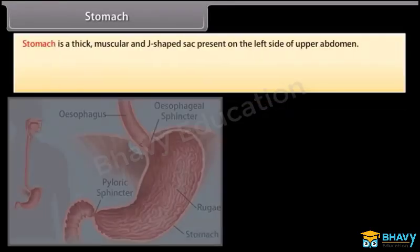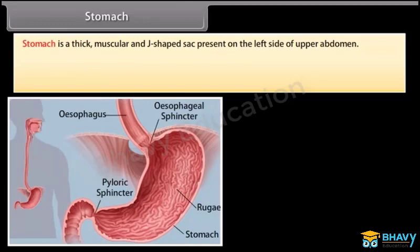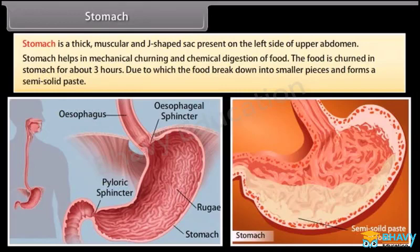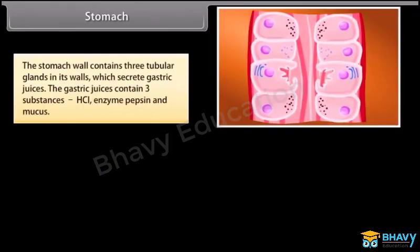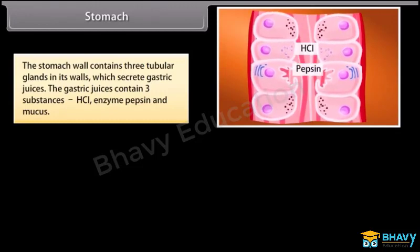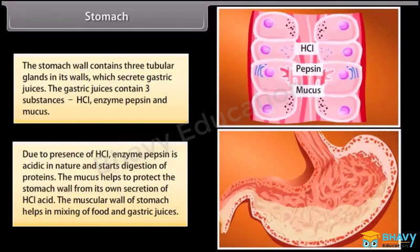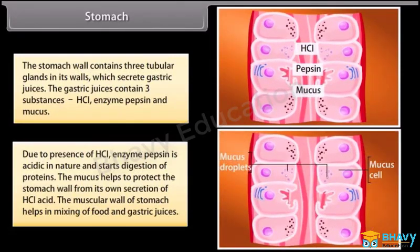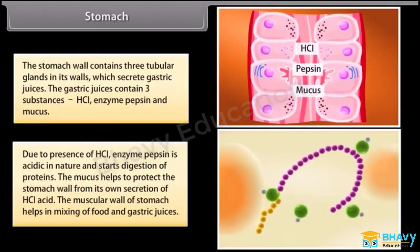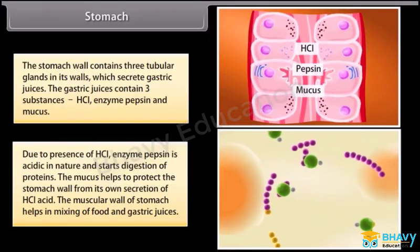Stomach is a thick muscular and J-shaped sac present on the left side of the upper abdomen. It helps in mechanical churning and chemical digestion of food. The food is churned in the stomach for about 3 hours, causing the food to break down into smaller pieces and form a semi-solid paste. The stomach wall contains tubular glands which secrete gastric juices containing three substances: HCl, enzyme pepsin, and mucus. Due to the presence of HCl, enzyme pepsin works in an acidic medium and starts digestion of proteins. The mucus helps protect the stomach wall from its own secretion of HCl acid.